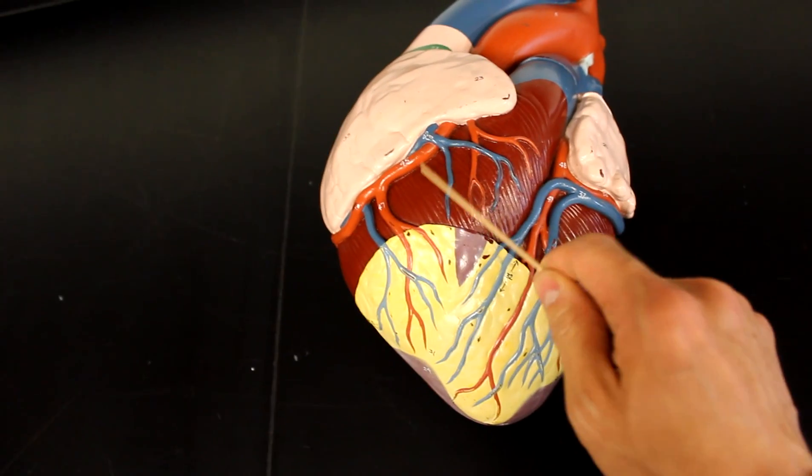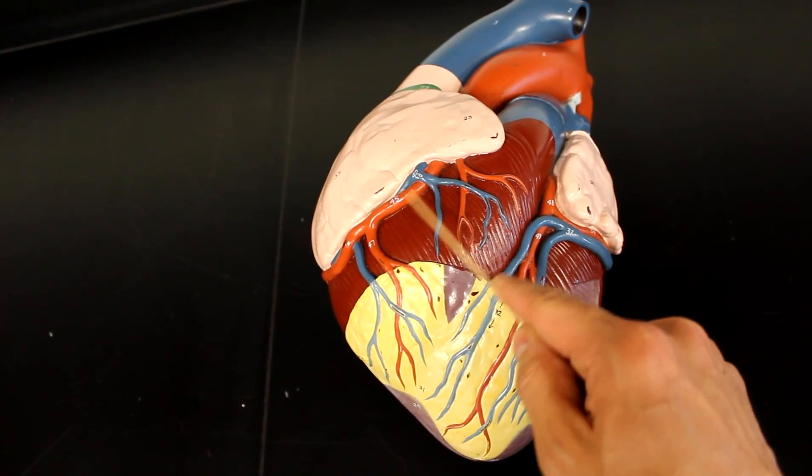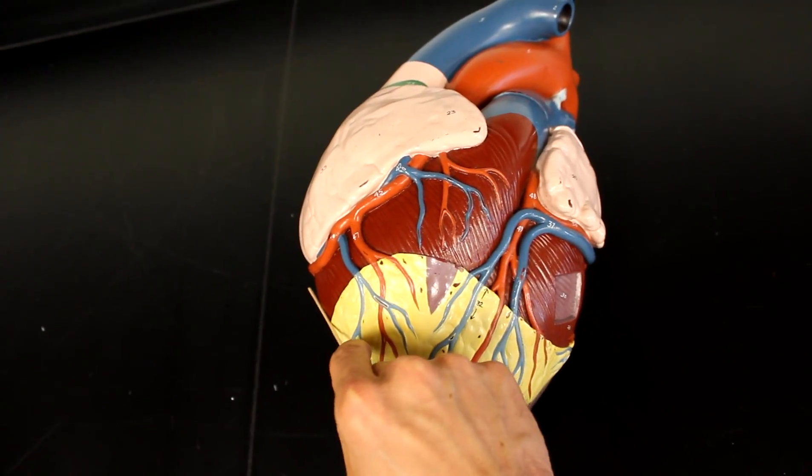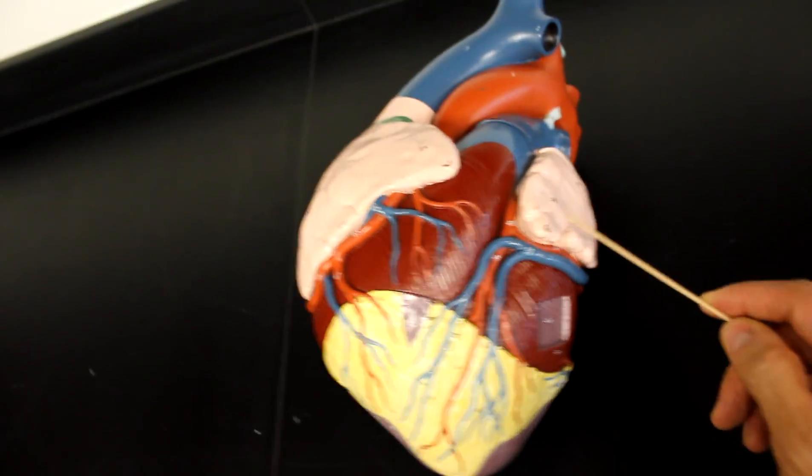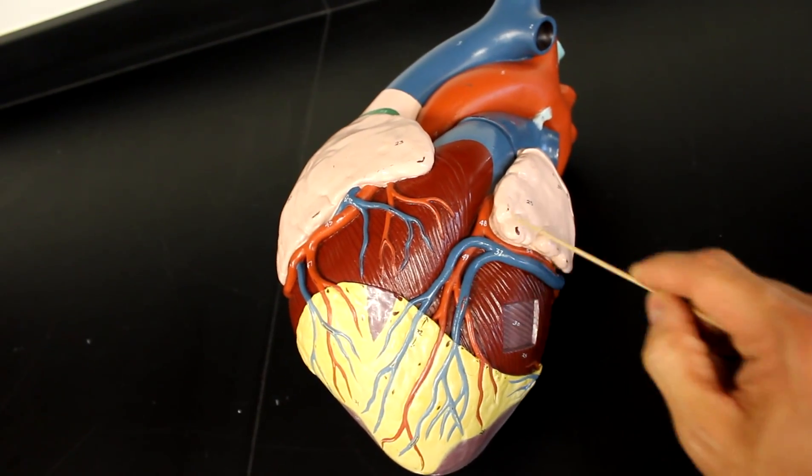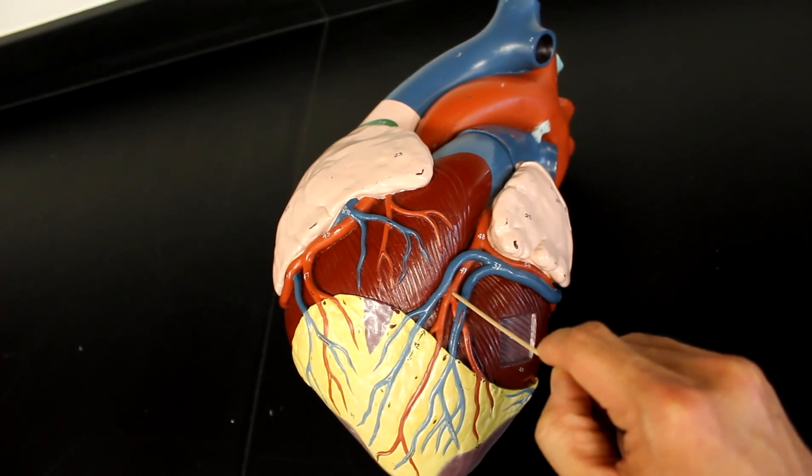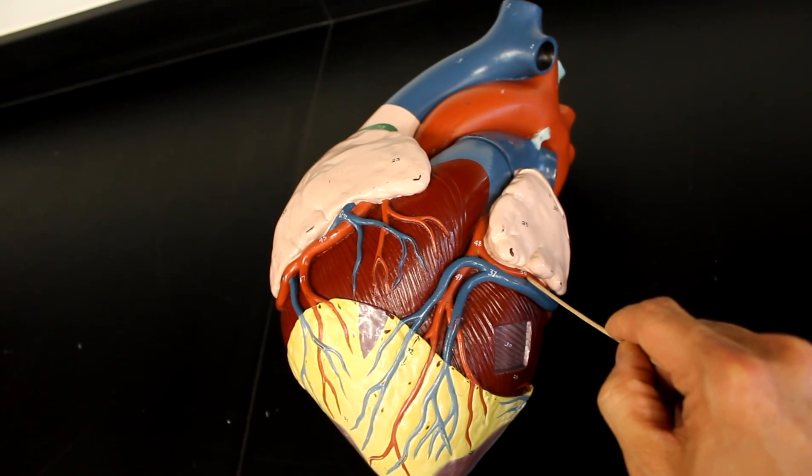You can imagine some people use mnemonics to remember—they like to say people that like to drive with RPMs: the right gives the posterior interventricular branch and the marginal, RPM. And law-abiding citizens, the LACs: the left gives off the anterior interventricular and the circumflex.